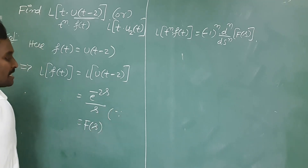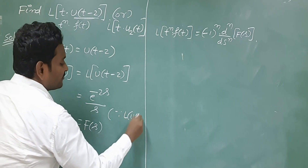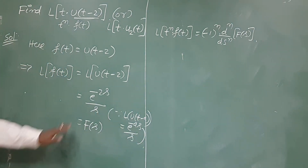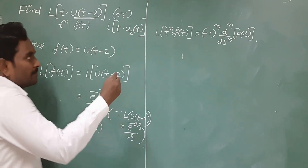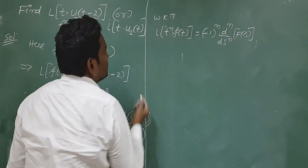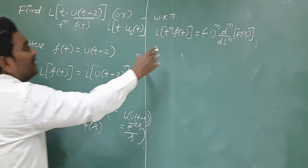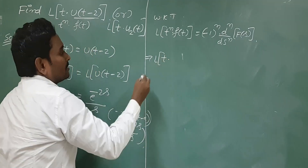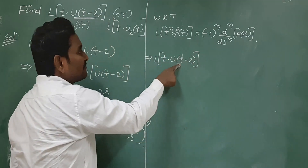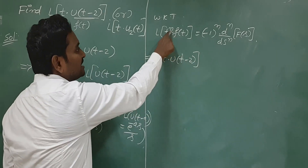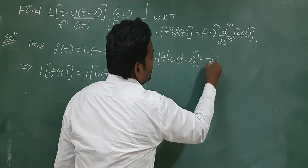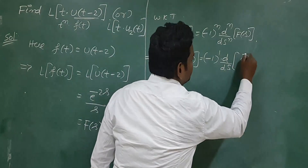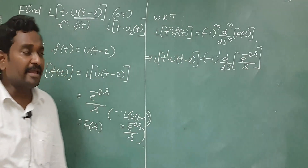Now apply the multiplication rule. L{t · u(t - 2)} with n = 1 gives (-1)^1 · d/ds of [e^(-2s) / s]. Using the quotient rule (d/ds)[u/v] = (v·u' - u·v') / v²: the derivative of e^(-2s) is -2e^(-2s), so we get: -1 times [(-2e^(-2s) · s - e^(-2s) · 1) / s²].